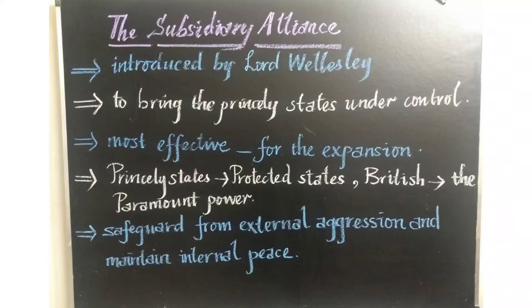The British came to be referred to as the paramount power — meaning the supreme power in India. What was the promise given by the British to the Indian rulers who joined under this alliance? They would safeguard the state from external aggression and also help the rulers to maintain internal peace. The Indian rulers who were ignorant and not aware of the diplomatic character of the British people — most of them joined under that, thinking the British would give protection to them. But the main motto of the British was to bring the Indian states under their control.